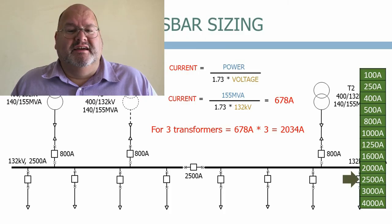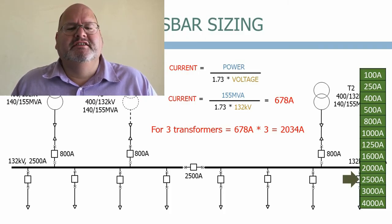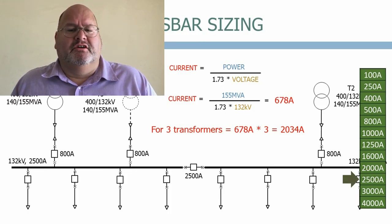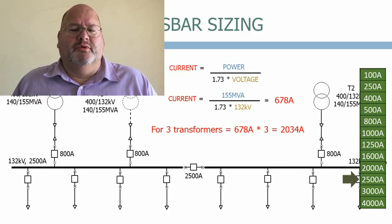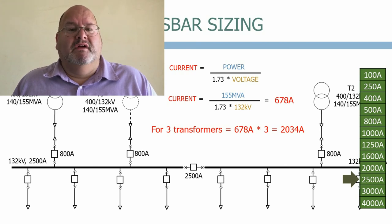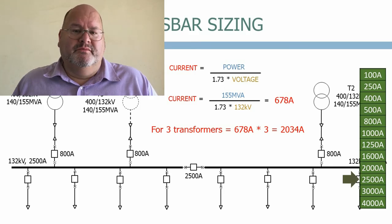Very often you will see designs where the incomers and busbar sections have the same rating. This is done as the purchase cost of similar sized circuit breakers can be minimal, and it also avoids having multiple circuit breaker ratings on the same switchboard. This keeps the cost of spares down and allows circuit breakers to be switched around between circuits when one of them fails.